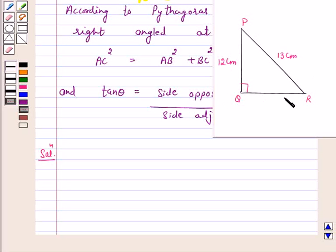In triangle PQR, PQ is 12 centimeter and PR is given to us 13 centimeter. This side QR is not given to us, so we will first find out the side QR.